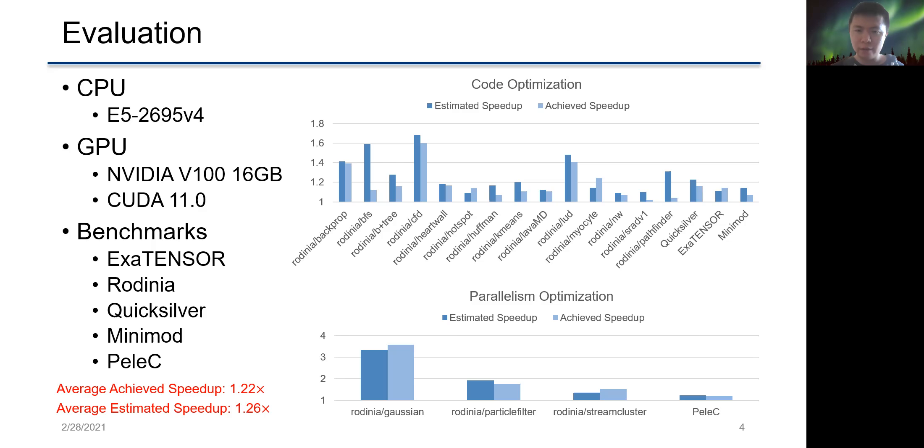On the right side, we can see the estimated speedups and the achieved speedups after applying GPA's suggested optimizations are quite close for most of the benchmarks. On average, we achieved a speedup about 1.22x. The average estimated speedup is about 1.26x.